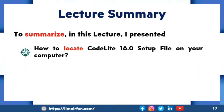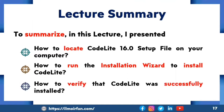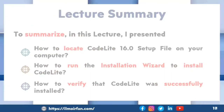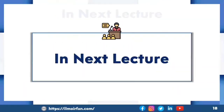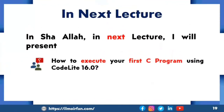To summarize, in this lecture: first I presented how to locate the CodeLight 16.0 setup file on your computer; after that I showed how to run the installation wizard to install CodeLight; and finally I presented how to verify that CodeLight was successfully installed. In the next lecture, I will present how to run your first C program using CodeLight 16.0.